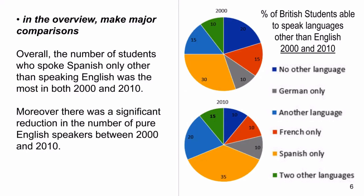Lastly, in the overview, make major comparisons. Overall, Spanish was spoken the most by students in both 2000 and 2010. Moreover, there was a significant reduction in the number of pure English speakers between 2000 and 2010. The next slide will show the entire task.